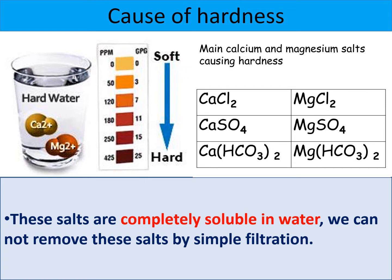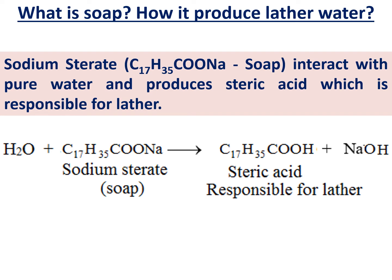Hardness is caused only by calcium and magnesium salts. Remember these six salts: calcium chloride, magnesium chloride, calcium sulfate, magnesium sulfate, calcium bicarbonate, and magnesium bicarbonate. These are completely dissolved in water, which is why we are unable to remove them easily. If they were not completely soluble, we could easily remove them by a separation process. But because they are completely soluble, that creates the problem — and that is the need to study how they can be removed.